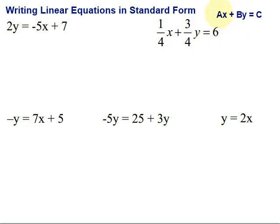Typically, standard form means that the A, B, and C are all integers, meaning there's no fractions or decimals involved. And we'll look at an example here of what we can do to get rid of those fractions.